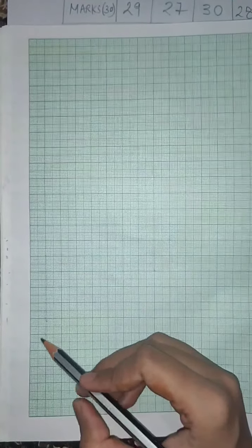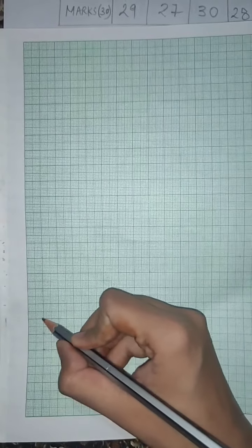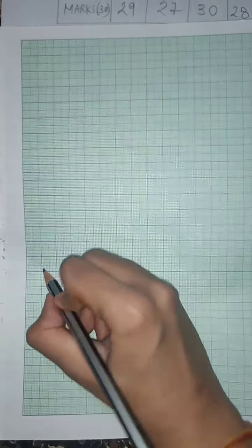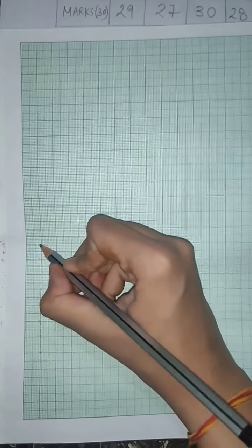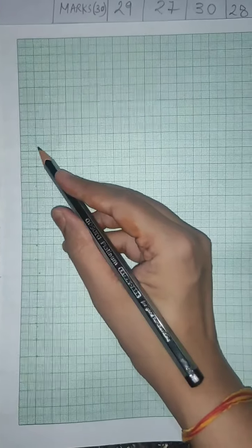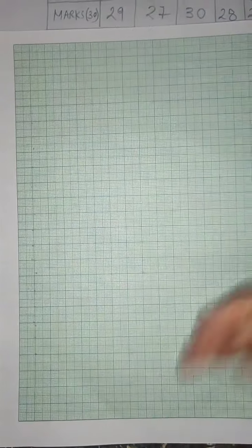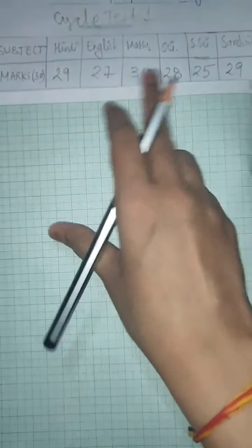Even you can take 2. Then 2, then 4, then 6, then 8, then 10, then 12, then 14, 16, 18, 20, 22, 24, 26, 28, 30. So if you choose scale of 2, then the difference will be better.